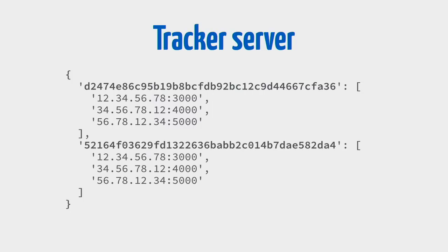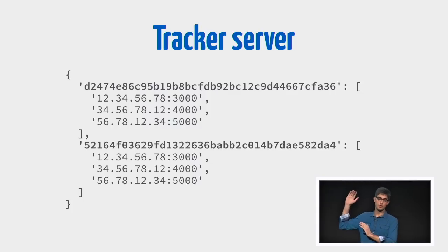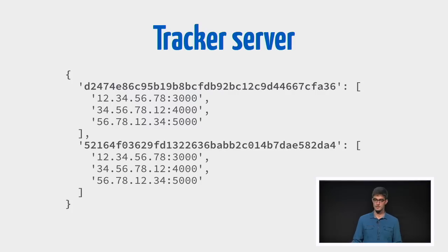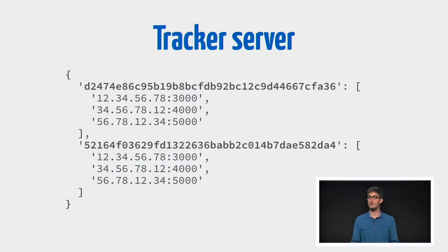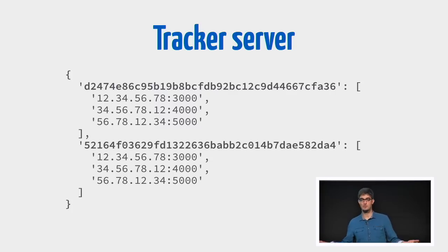The info hash is used by a tracker server. What the tracker server does is keep a mapping where the key is the info hash and the value is an array of all the peers that are interested in that torrent — both uploaders and downloaders. A client tells the tracker: hey, I'm interested in this file, please add me to your array of peers. Then the next time someone comes along trying to download that file, the tracker will send them that array and they'll know who to talk to.